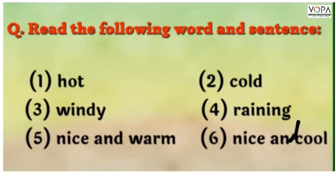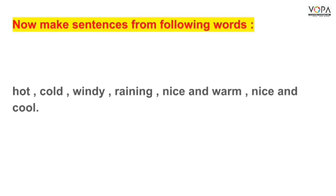Windy, Raining, Nice and warm, Nice and cool. Now make sentences from following words. Udhil shabdan paasun Vakke banwa: Hot, cold, Windy, Raining, Nice and warm, Nice and cool.